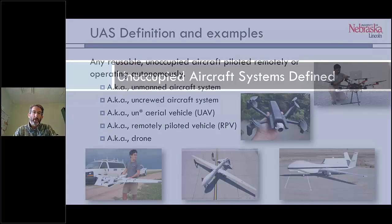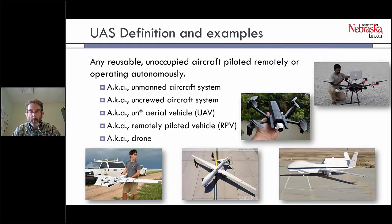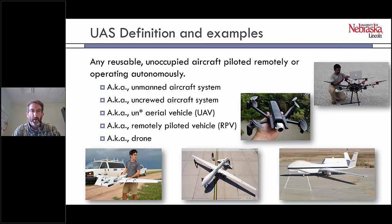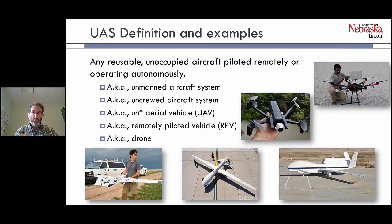What are unoccupied aircraft systems? Ultimately, regardless of what you call them, the definition is the same: they are reusable, unoccupied aircraft that are piloted remotely or operating autonomously. They have been called multiple things — unmanned aircraft system is the most recently accepted term, but we've moved away from that. Some use 'unoccupied,' others use 'uncrewed.' You'll also hear them referred to as remotely piloted vehicles, RPVs, or just drones.